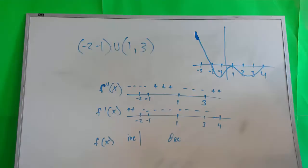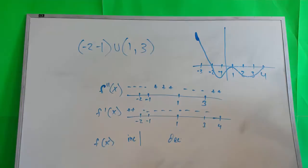Part B. On what open intervals contained in negative 3 to 4 is the graph of f both concave down and decreasing? Give a reason for your answer.